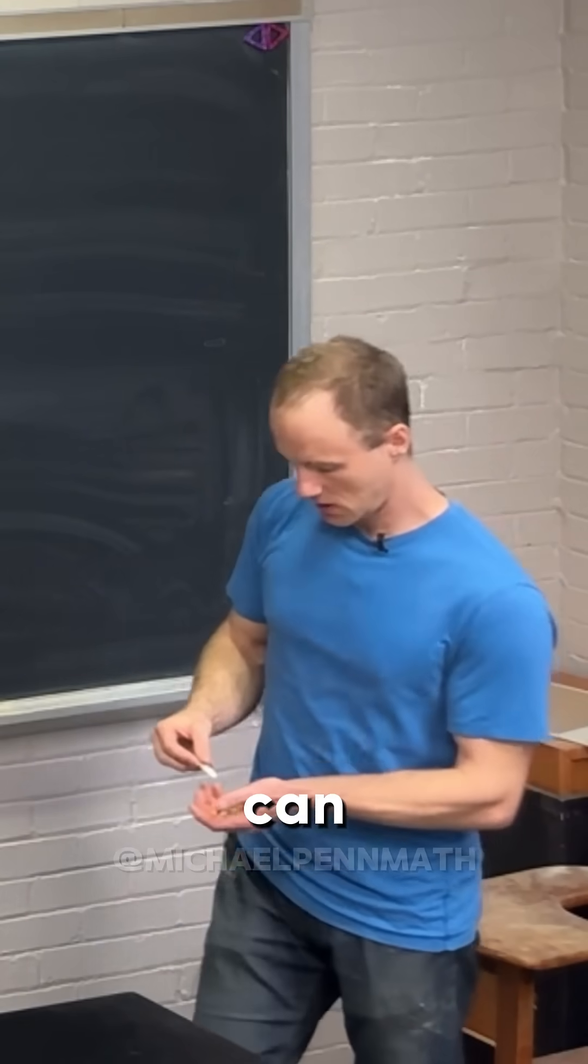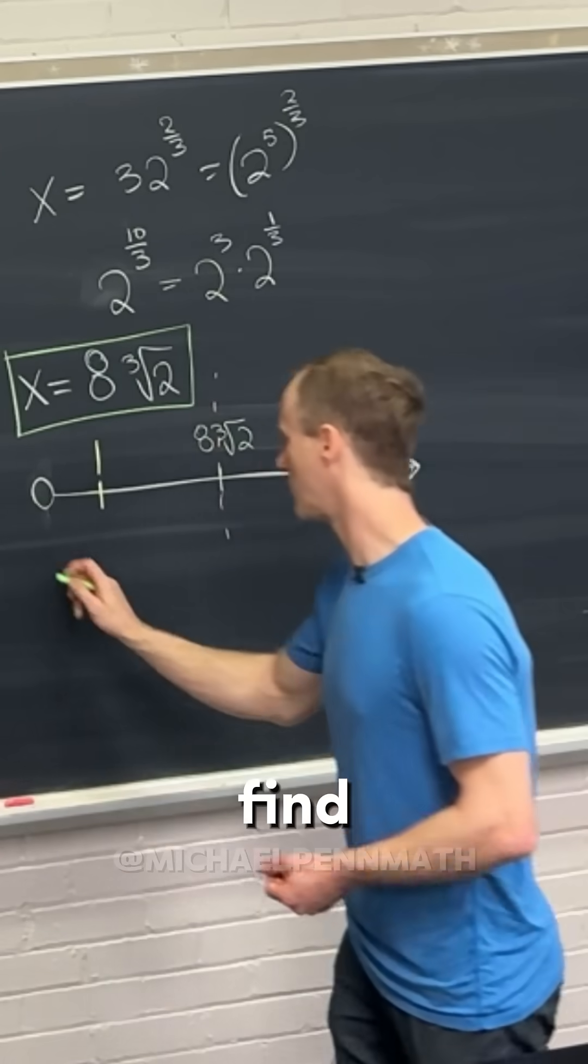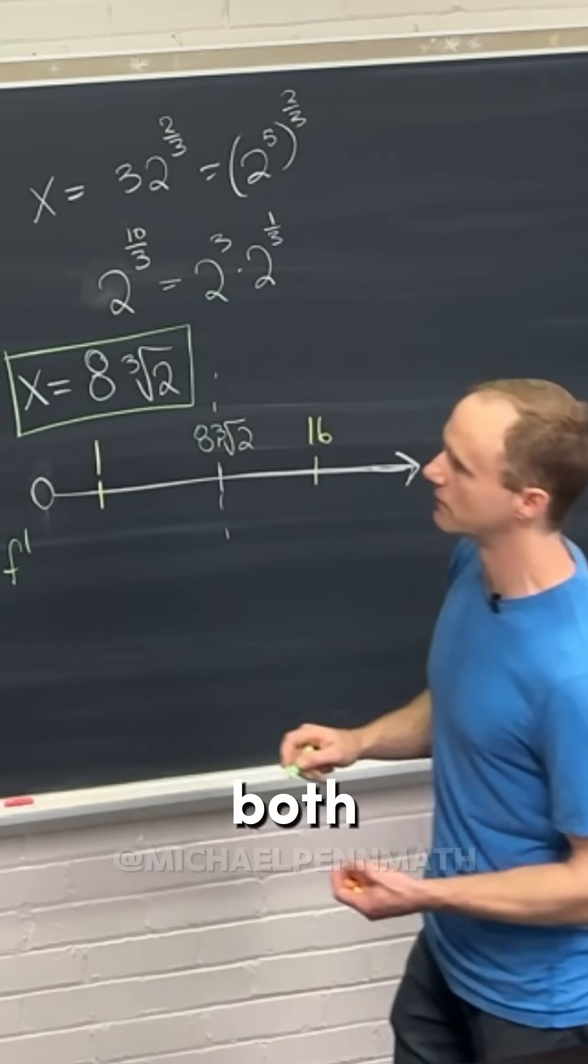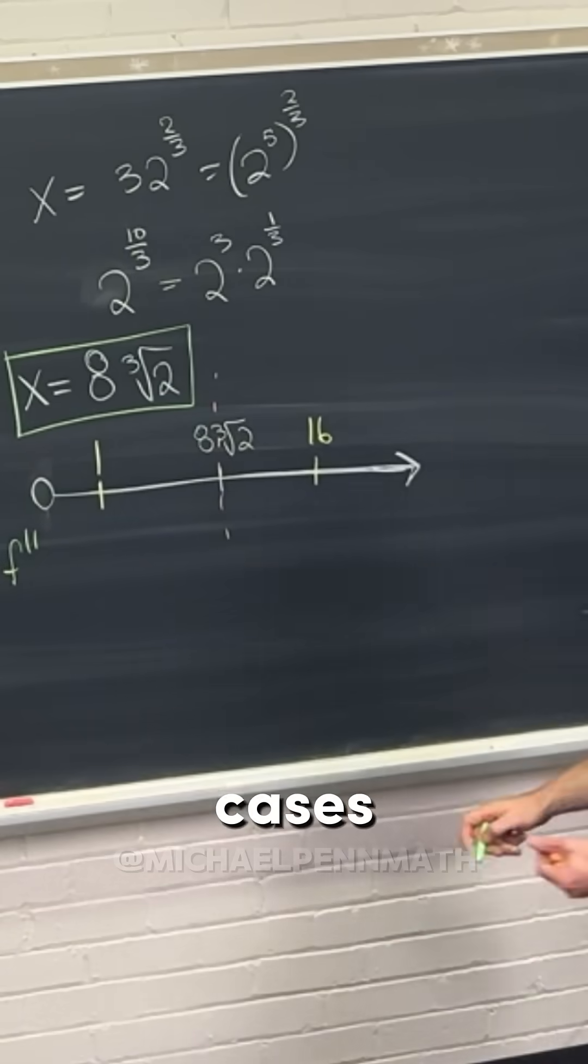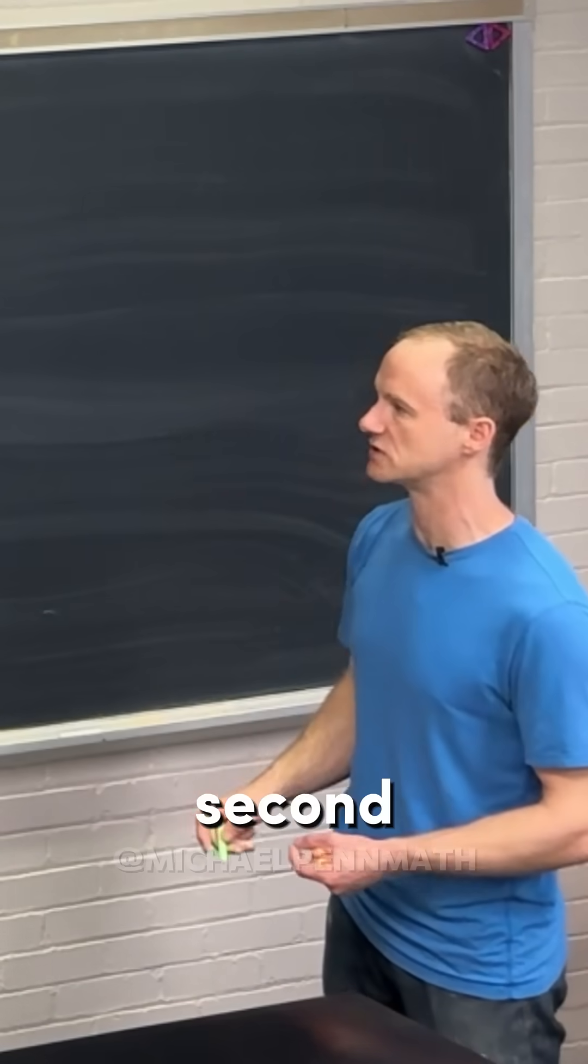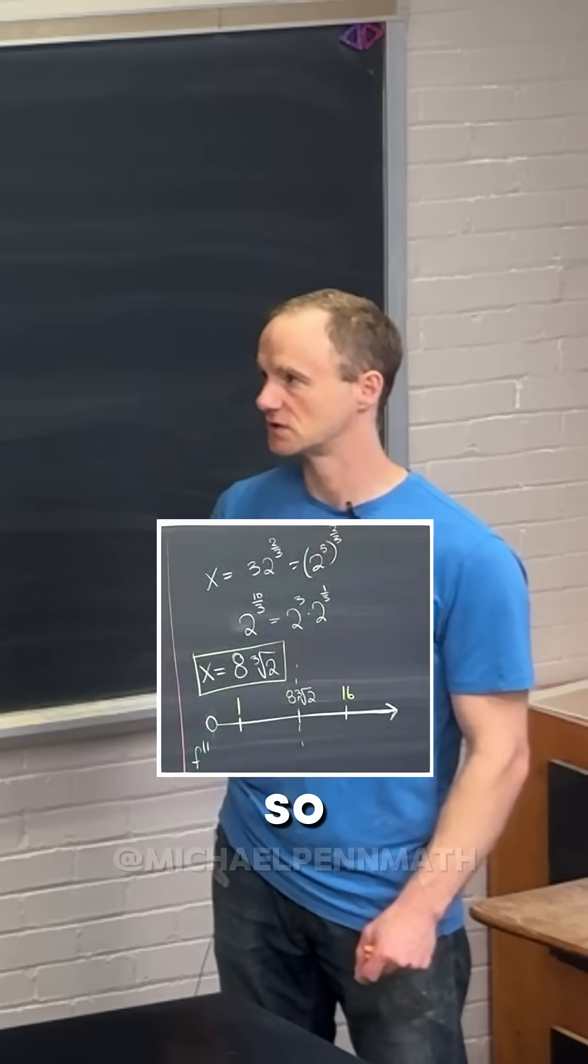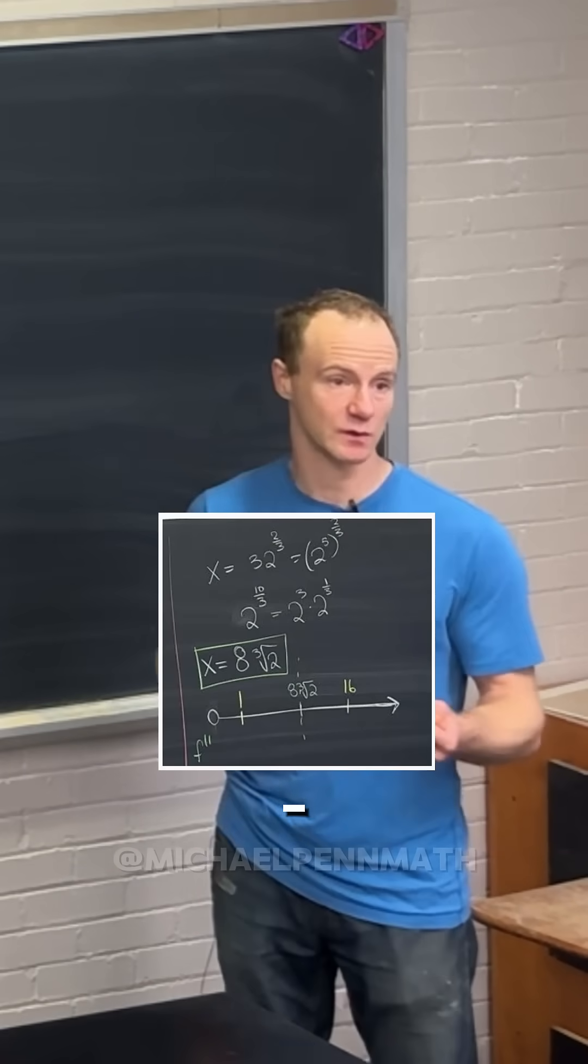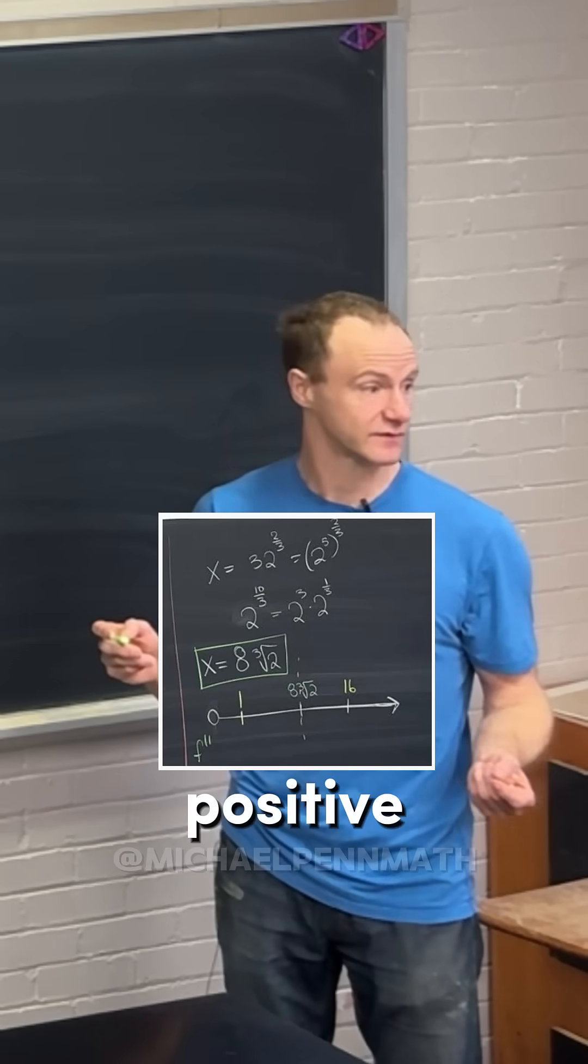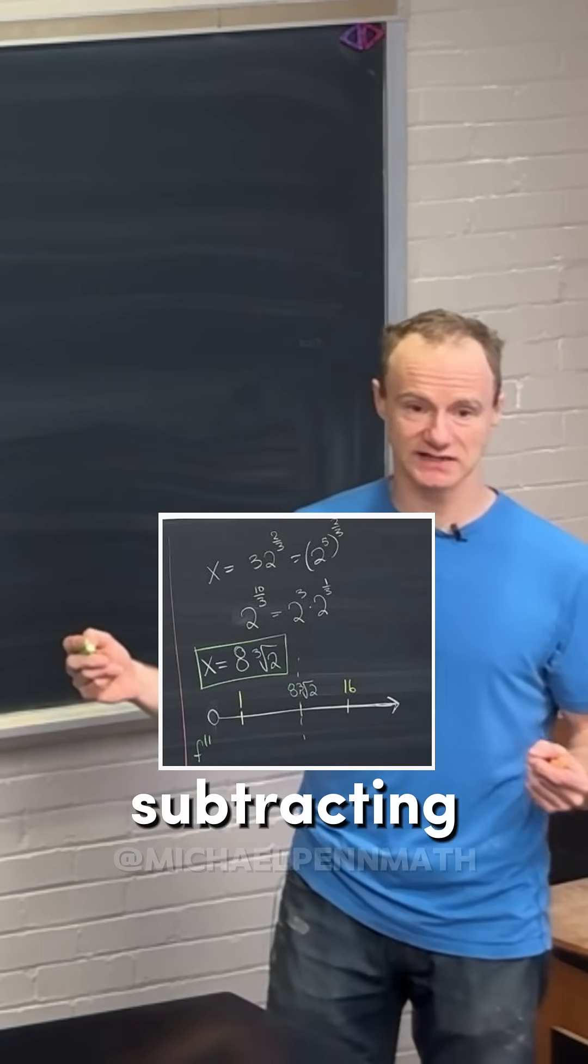So now we can plug in. We want to find the sign of the second derivative in both of these cases. So if we plug 1 into the second derivative, let's just eyeball it. Is that going to be positive or negative? Plugging 1 in, you get 2 minus 1 over 16. So that's going to be positive, right? Because you're taking 2 and you're subtracting a 16th.